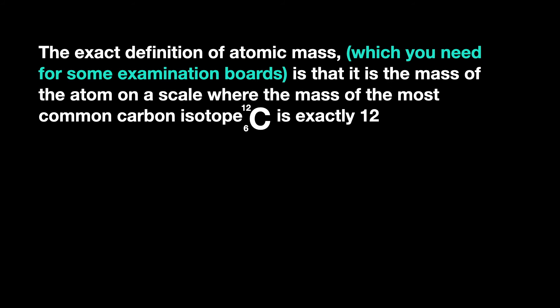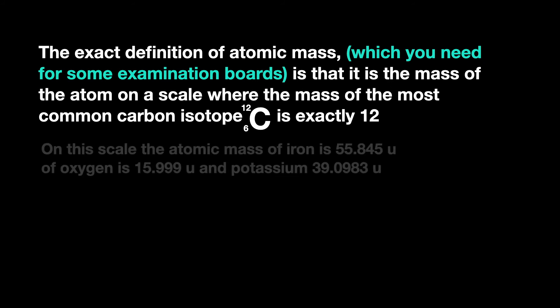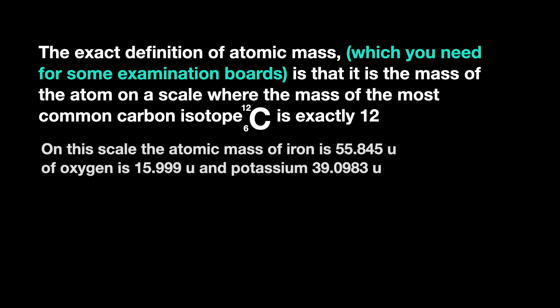On this scale, the mass of iron is 55.845 u and of oxygen 15.999 u, and potassium 39.0983 u. The atomic mass of chlorine is 35.453 u, which is not close to a whole number. These differences arise because as the atoms are created, the coming together of protons, neutrons, and electrons result in huge energy changes which are reflected in the mass.